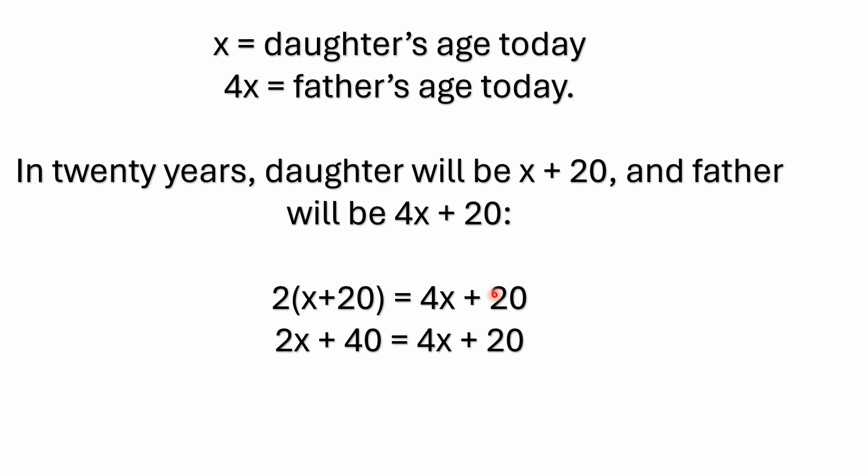We do know, though, that in 20 years, the father will be twice as old as the daughter. So if we wanted to make an equation out of this, we would multiply the daughter's age by 2. In 20 years, we would multiply the daughter's age by 2, which would then equal the father's age in 20 years.